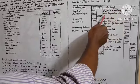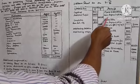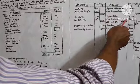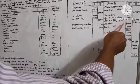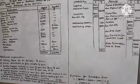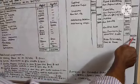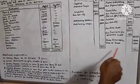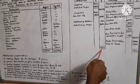Assets side: Plant and machinery 50,000 less depreciation 5,000 equals 45,000. Furniture 10,000 less depreciation 2,000 equals 8,000. Closing stock (second effect) 50,000. Debtors 30,000 less set-off 2,000, less bad debt 1,000, less provision for doubtful debts 1,350, outer column 25,650. Bills receivable 15,000. Cash at bank 14,500. Total assets 1,58,150 equals total liabilities 1,58,150.